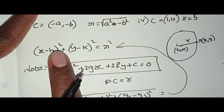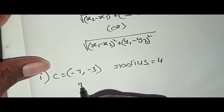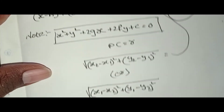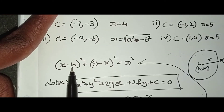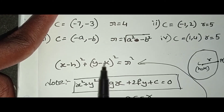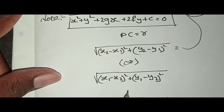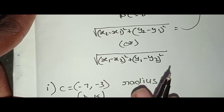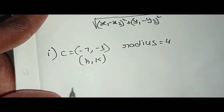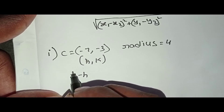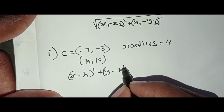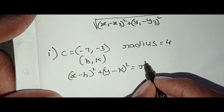We compare with h and k. Here h equals −7, k equals −3, and r equals 4. Substituting into the formula (x − h)² + (y − k)² = r², we get (x − (−7))² + (y − (−3))² = 4².